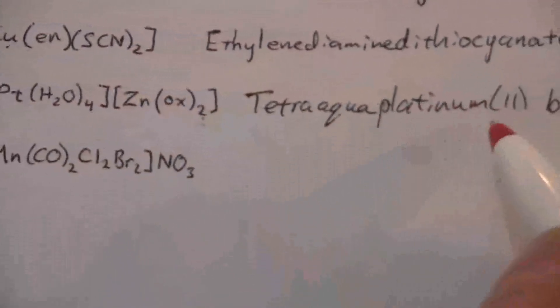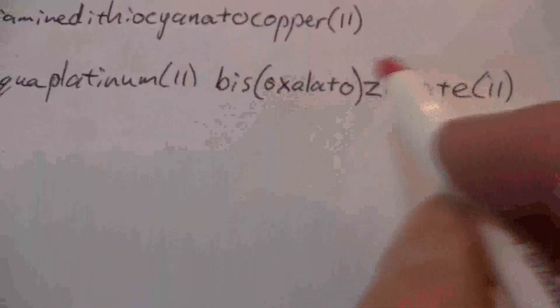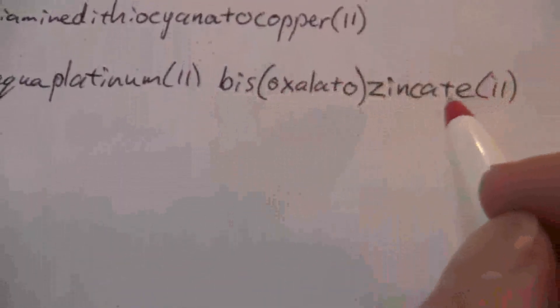All right, so you notice platinum when the metal is in the cation, we leave its ending alone. When the metal is in the anion, we change it to ATE. Okay.